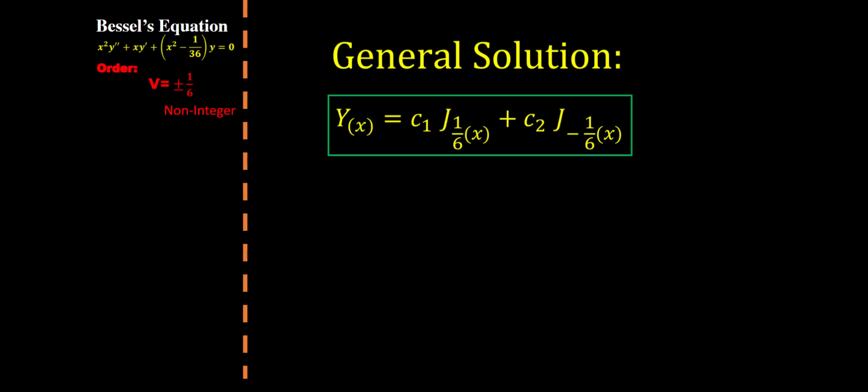Therefore Bessel worked it out that our general solution can be written in this form: Y(x) = c₁J₁/₆(x) + c₂J₋₁/₆(x). c₁ and c₂ are just simple constants, and the two J functions are Bessel functions of the first kind.